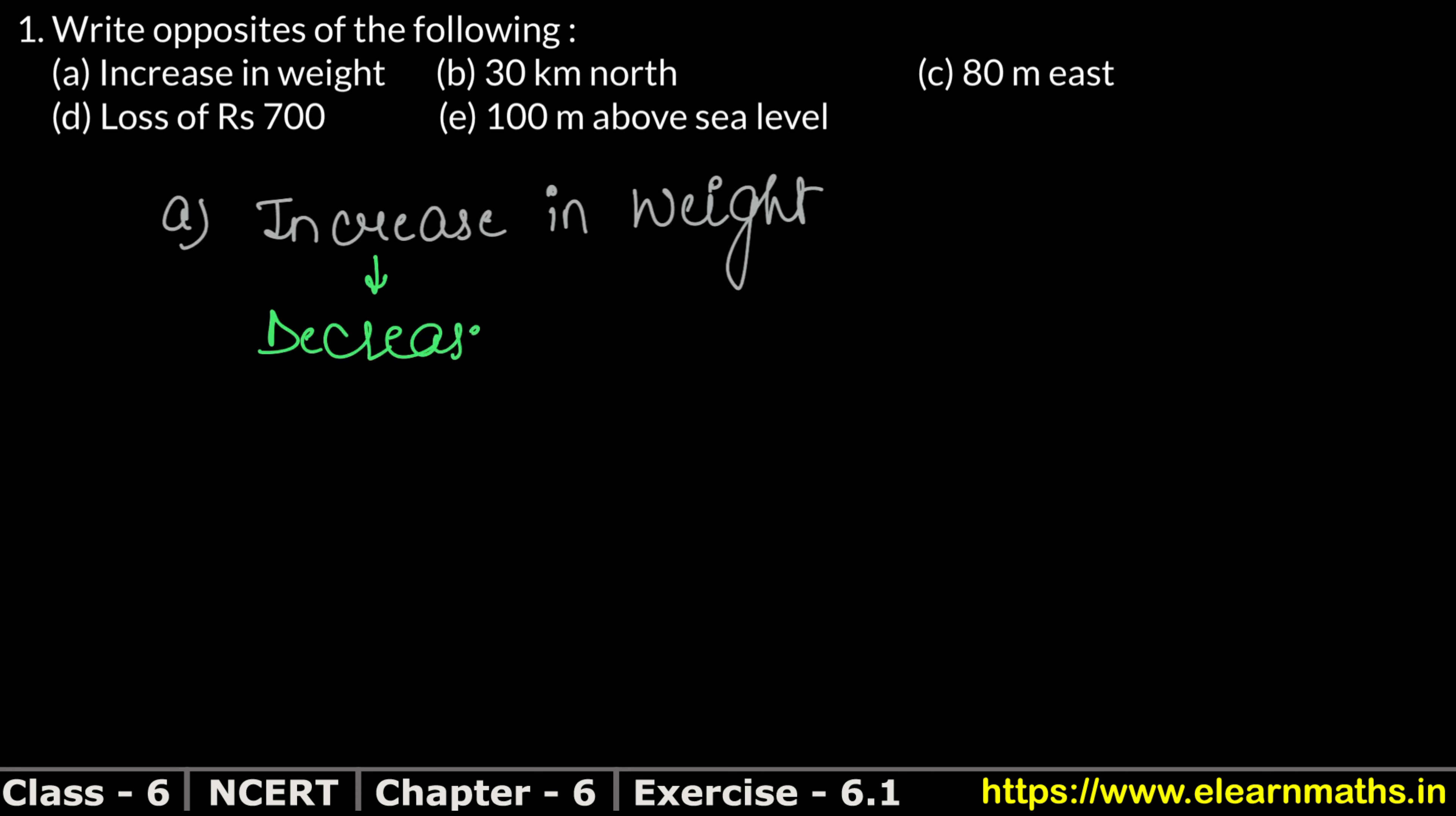Next is part B: 30 km north. Let's write 30 km north. Now what is the opposite? Obviously, it's about north direction.